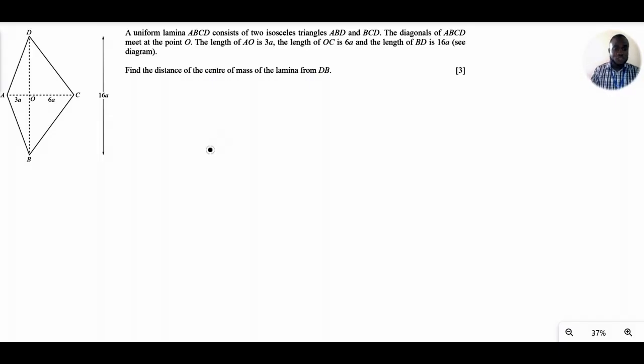For this first question, we have a lamina ABCD which consists of two isosceles triangles. The length of OA as indicated in this diagram is 3a, and the length of OC is 6a. The length BD as given is 16a. We want to find the distance of the center of mass of this lamina with reference to the line BD. How far from BD would the center of mass be? We want a distance perpendicular to BD that would locate our center of mass of this lamina.